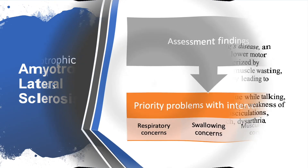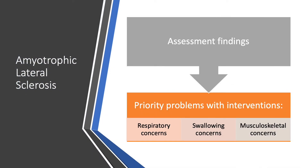ALS can be determined through assessment findings as part of the differential diagnosis. Priority problems with interventions include respiratory concerns, swallowing concerns, and musculoskeletal concerns. There is no known cure, no treatment, and no preventative measures. A drug known as riluzole is the only FDA-approved drug believed to extend survival time. In the meantime, provide exercise and mobility programs, manage swallowing difficulties, and offer respiratory support as the disease progresses.